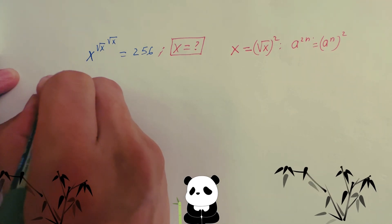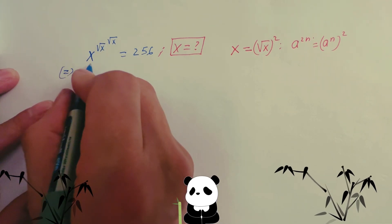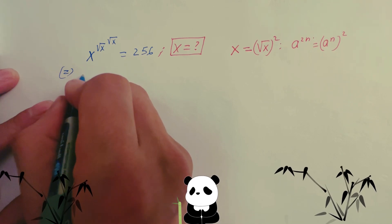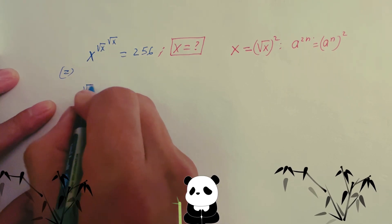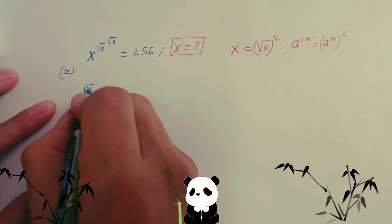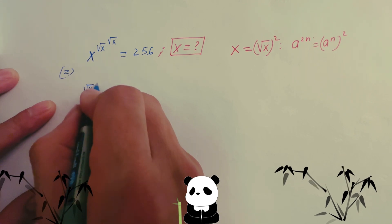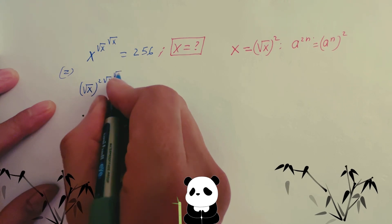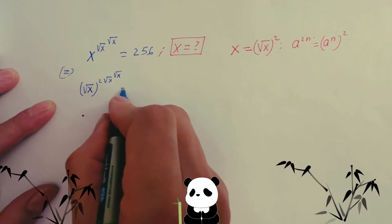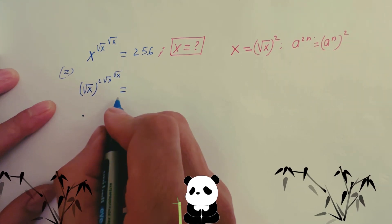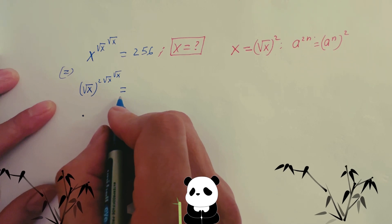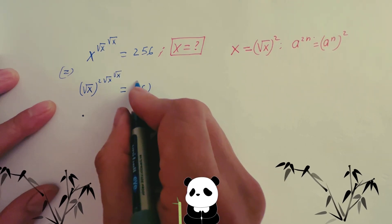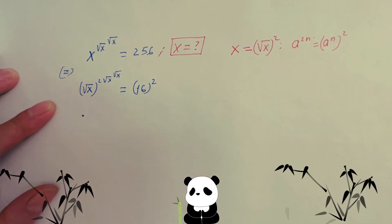Now you can rewrite the equation. It becomes: square root x, to the power of square root x, to the power of square root x. And you know 256 you can write as 16 squared.